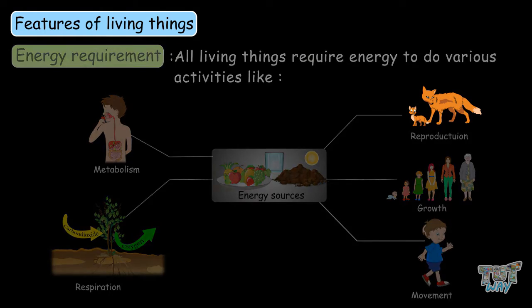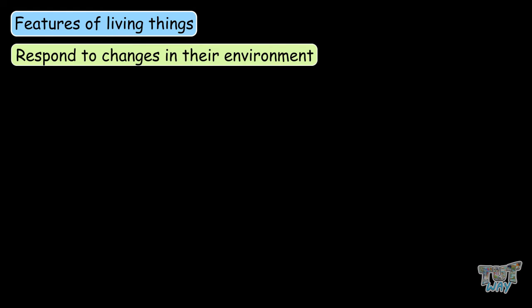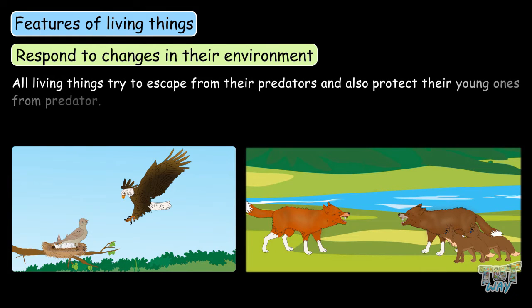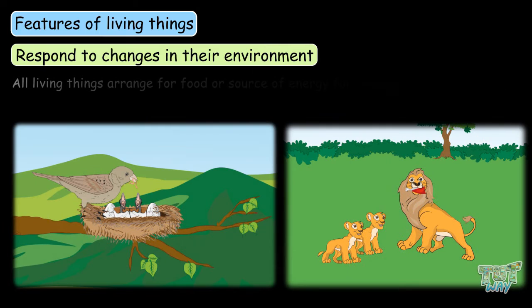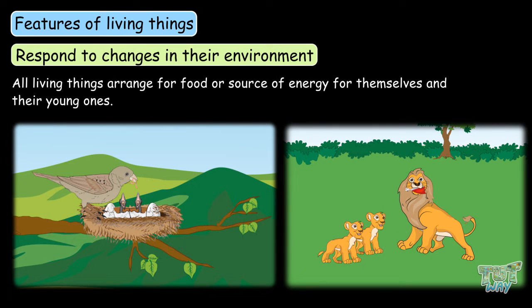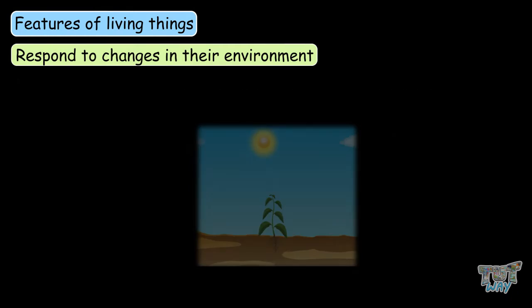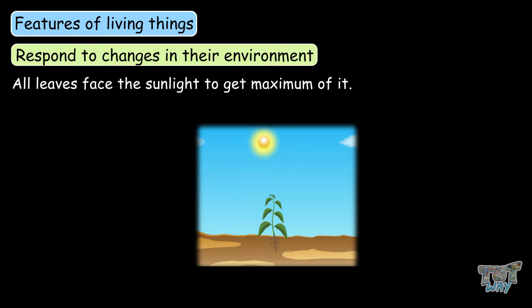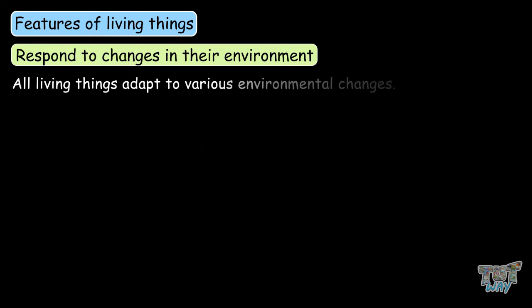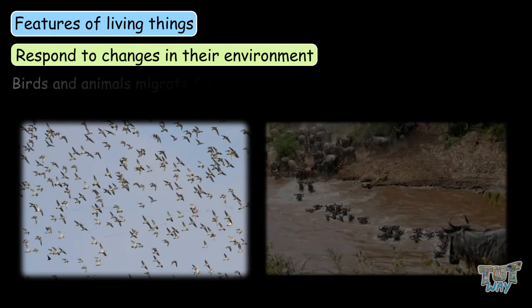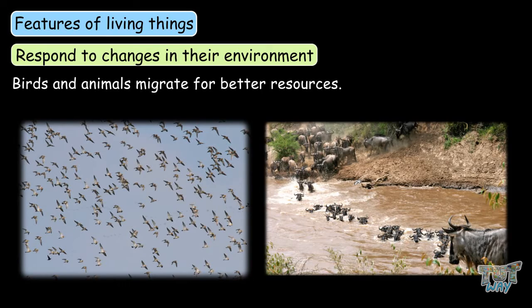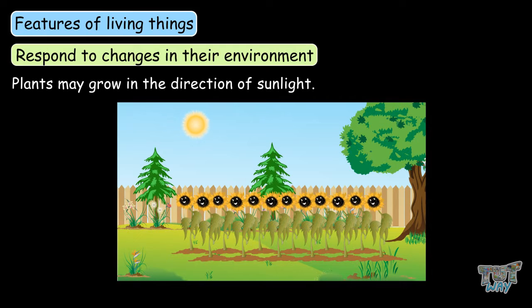All living things respond to changes in their environment. For example, all living things try to escape from their predators and to protect their young ones from predators. All living things arrange for food or a source of energy for themselves and their young ones. All plants grow in the direction of moist soil, and all leaves face the sunlight to get maximum of it. Birds and animals migrate for better resources, and plants may grow in the direction of sunlight.